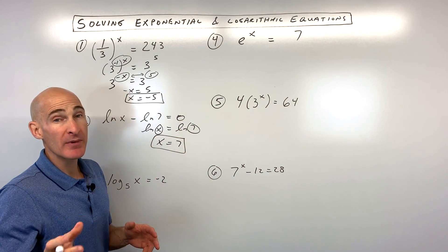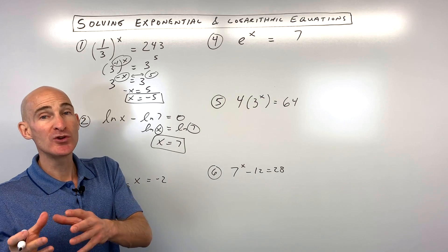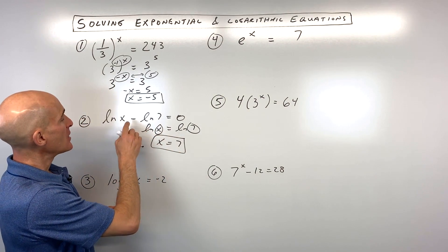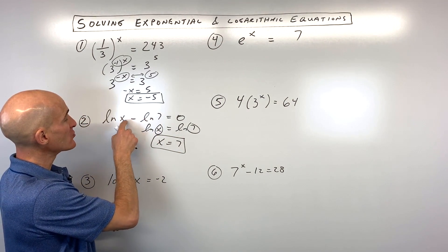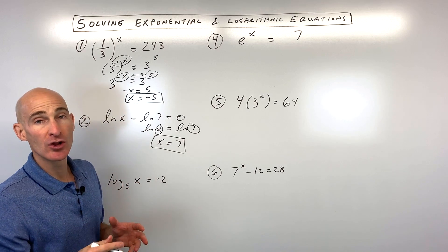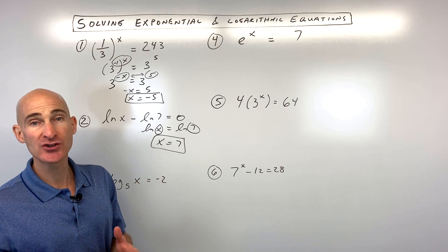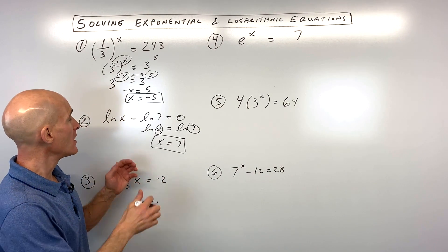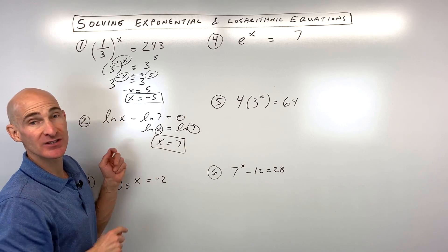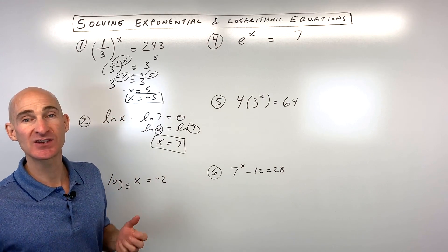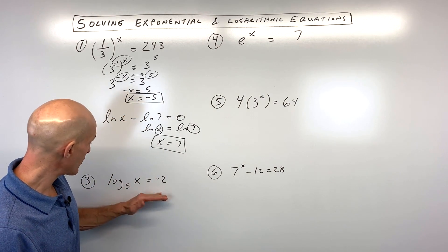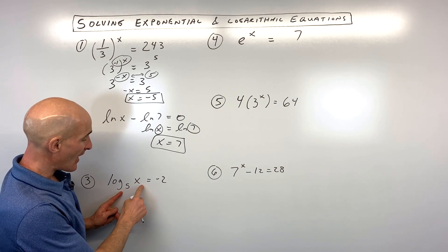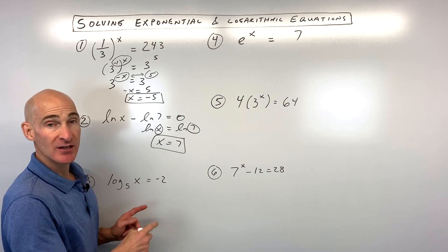One thing you want to pay attention to is that when you get your answer solving these log equations, put it back in and make sure you're not taking the log or natural log of a negative quantity or zero — otherwise it's extraneous. For number three: log base 5 of x equals negative 2.